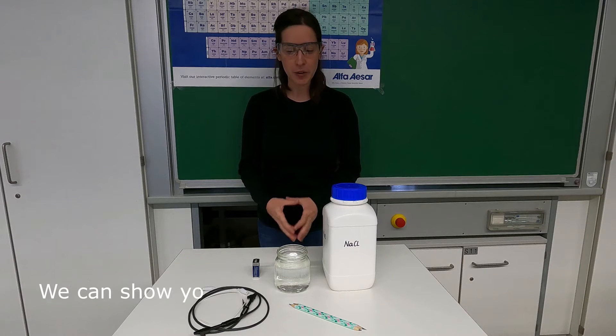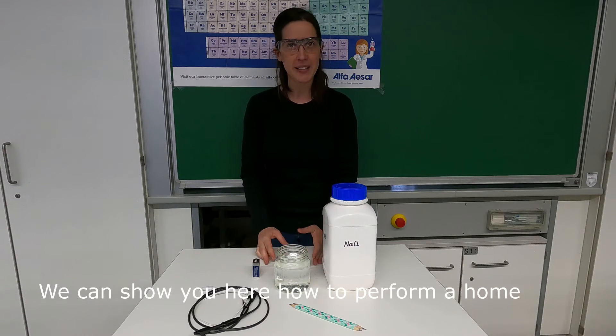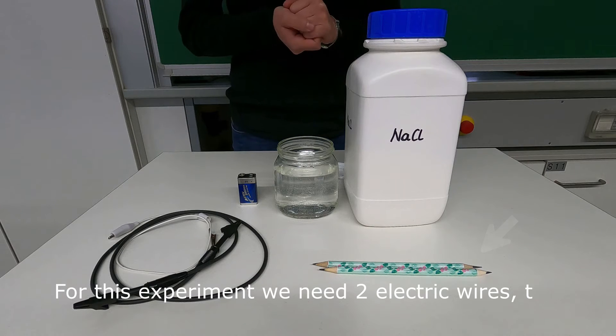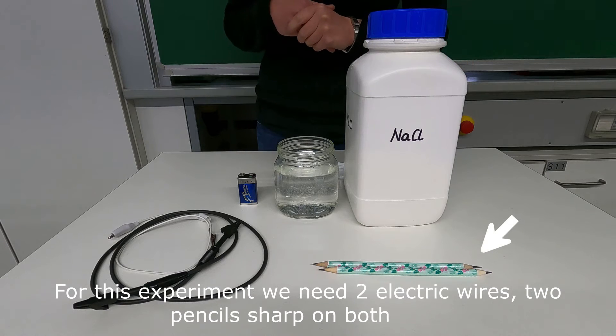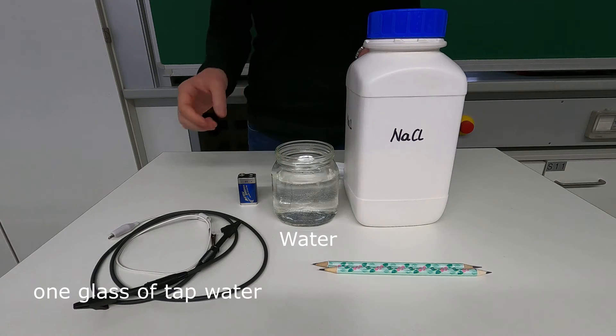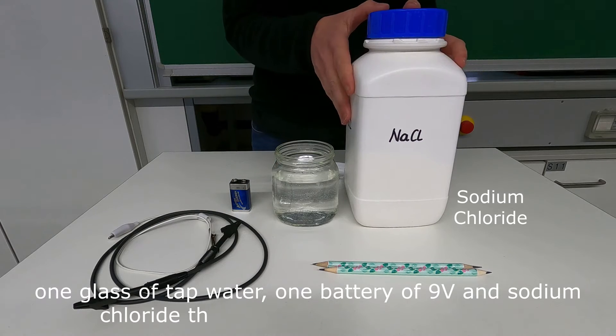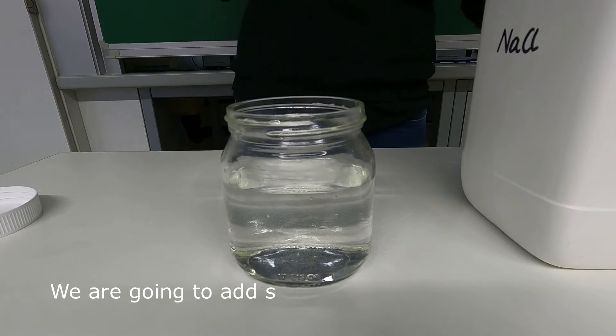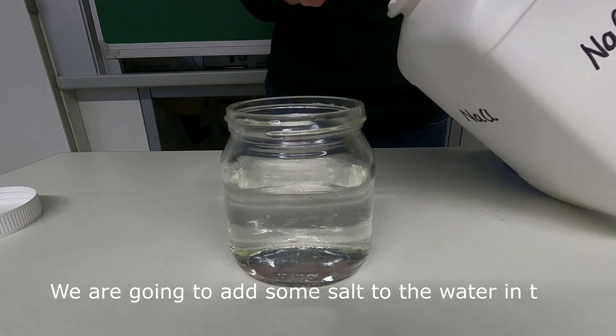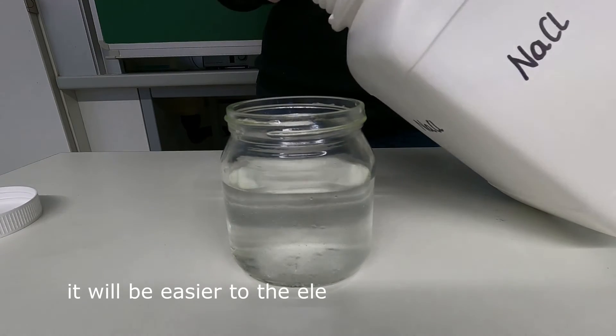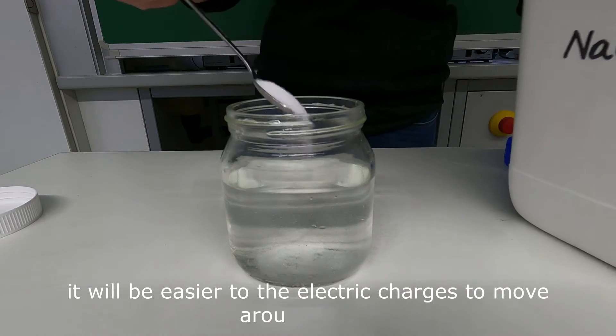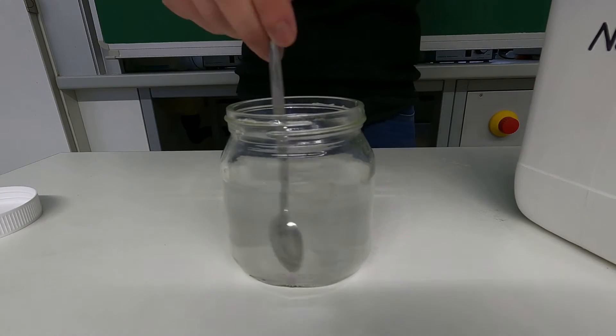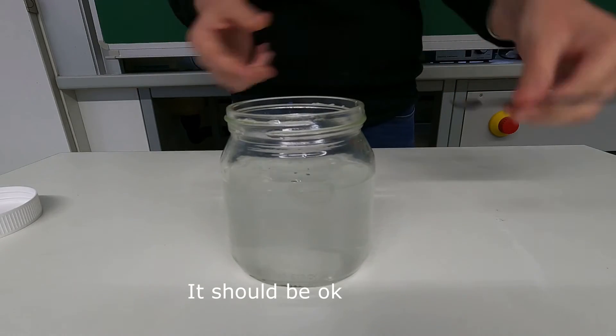We can show you here how to perform a homemade electrolysis. For this experiment we need two electric wires, two pencils sharpened on both sides, one glass of tap water, one battery of nine volts and sodium chloride that is basically the cooking salt. We are going to add some salt to the water. In this way it will be easier for the electric charges to move around water.